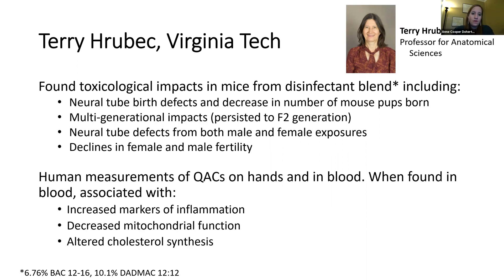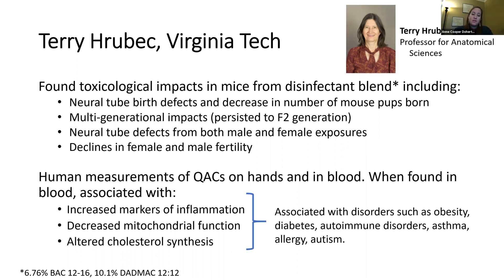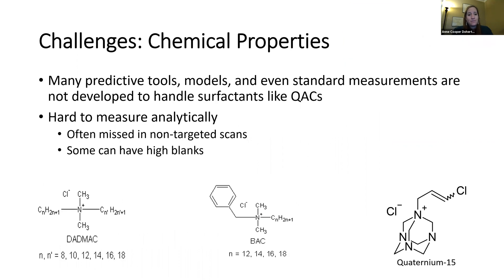She also did some work with humans, looking at quacks on hands from hand wipes and in blood samples. She found that when quacks were present in blood, it was associated with increased markers of inflammation, decreased mitochondrial function, and altered cholesterol synthesis. She indicated these can be associated with disorders such as obesity, diabetes, autoimmune disorders, asthma, allergy, and autism — a whole host of concerning conditions. It's a really interesting case study and her slides are available on the Biomonitoring California meeting page.